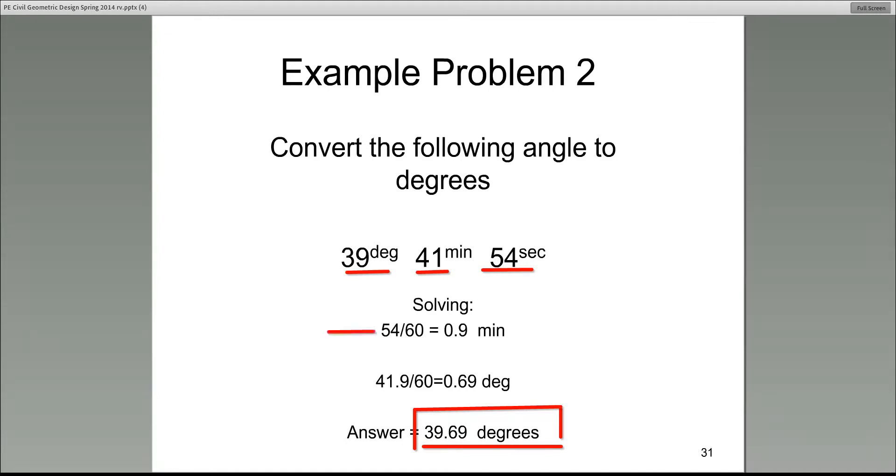You start with the seconds, divide that by 60. 54 over 60 gives you how many fraction of a minute you have, and then add that fraction to the 41 minutes, which is 41.9 divided by 60. That gives you how many fraction of degrees you have, add it to 39, there is 39.69.